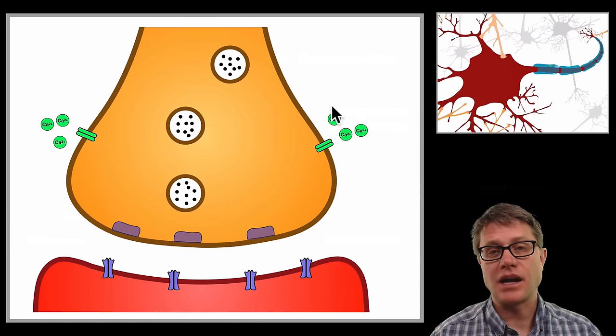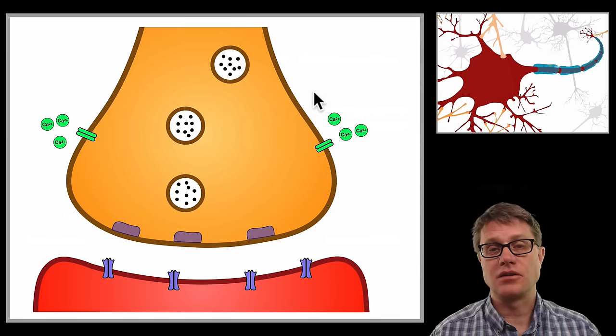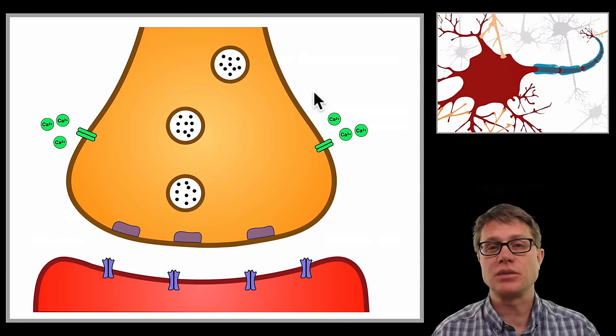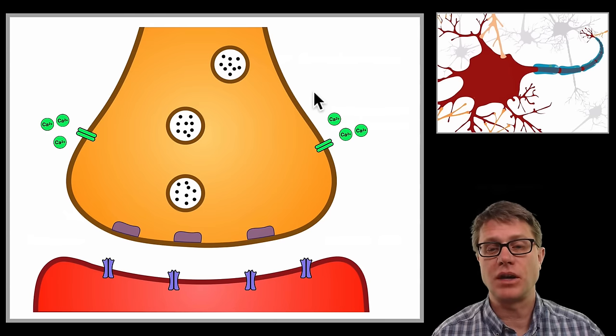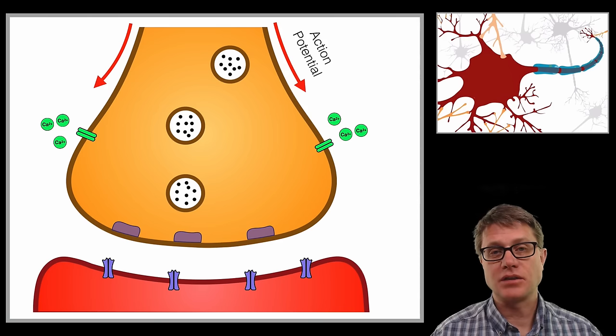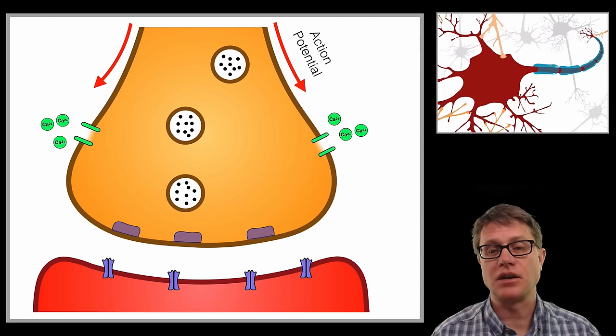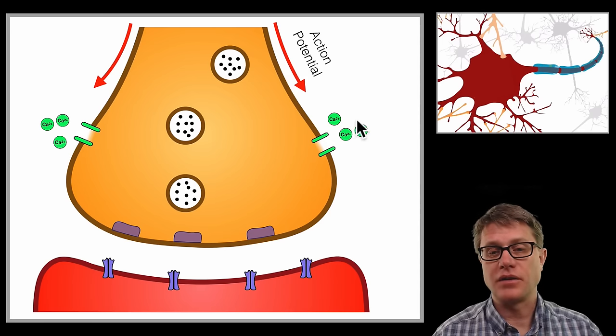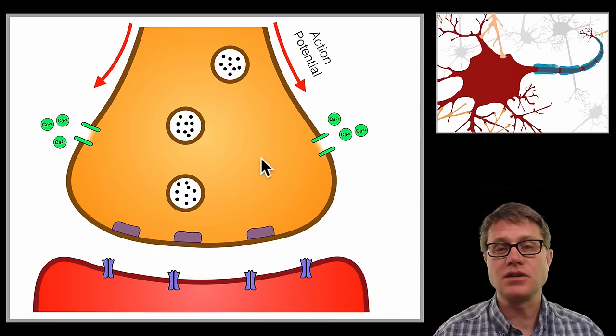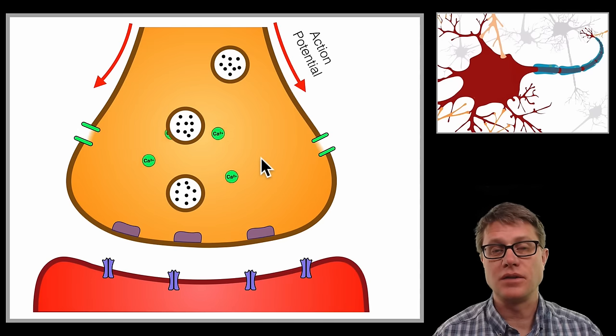So first thing that happens is we have an action potential that is moving down this neuron here. If you don't understand what an action potential is, I will put a link to a video that I made on those. So the action potential comes down. And what that is going to do is the depolarization of that neuron is going to open up these calcium voltage gated channels. Now the electrochemical gradient for those calcium ions is into the neuron itself. And so they are going to move in.